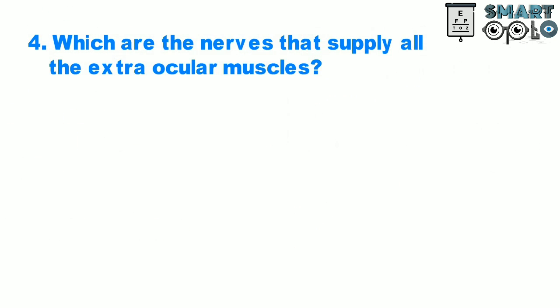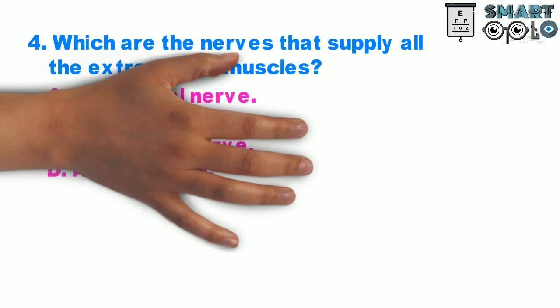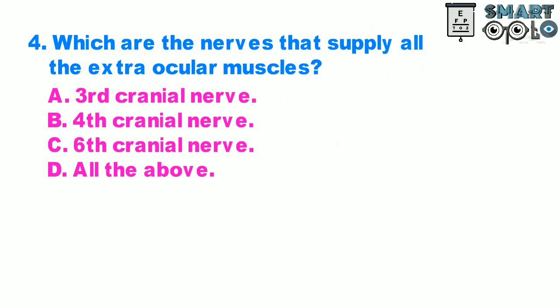Question 4. Which are the nerves that supply all the extraocular muscles? A. Third cranial nerve, B. Fourth cranial nerve, C. Sixth cranial nerve, D. All of the above.